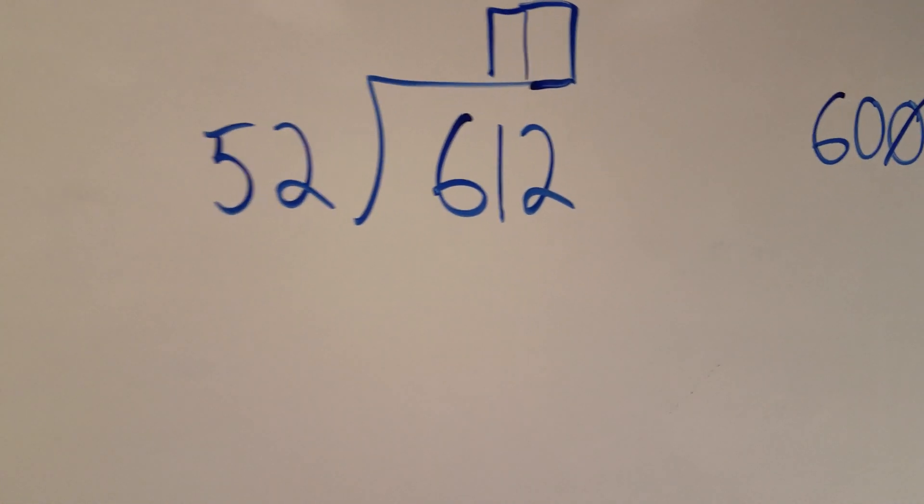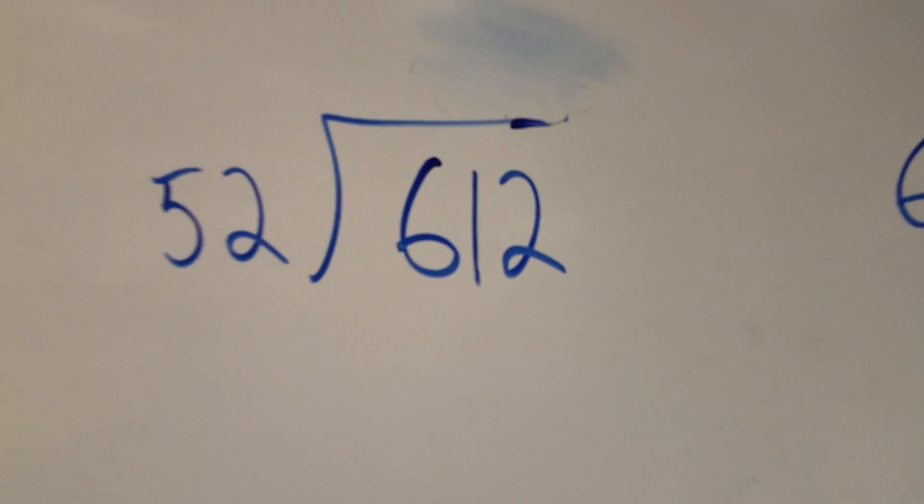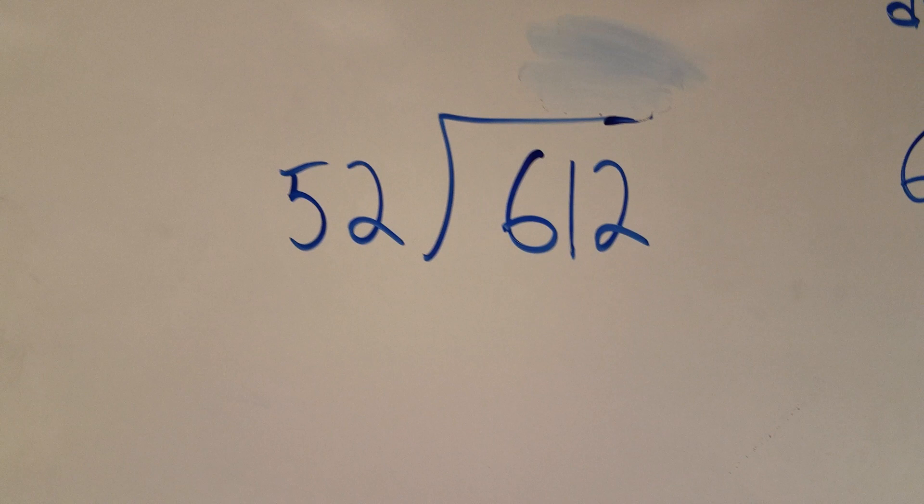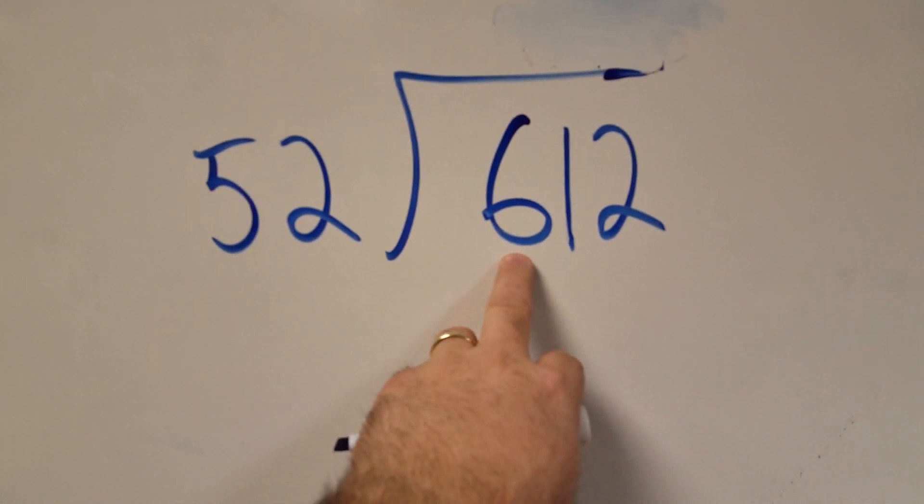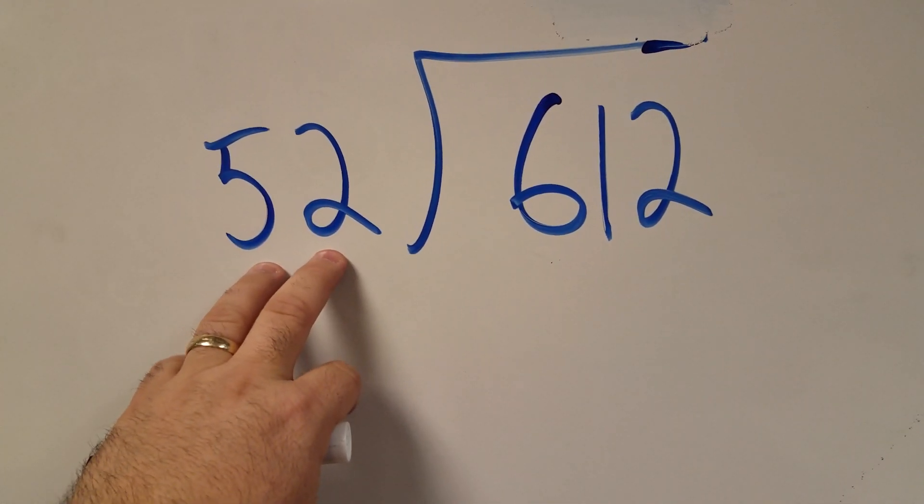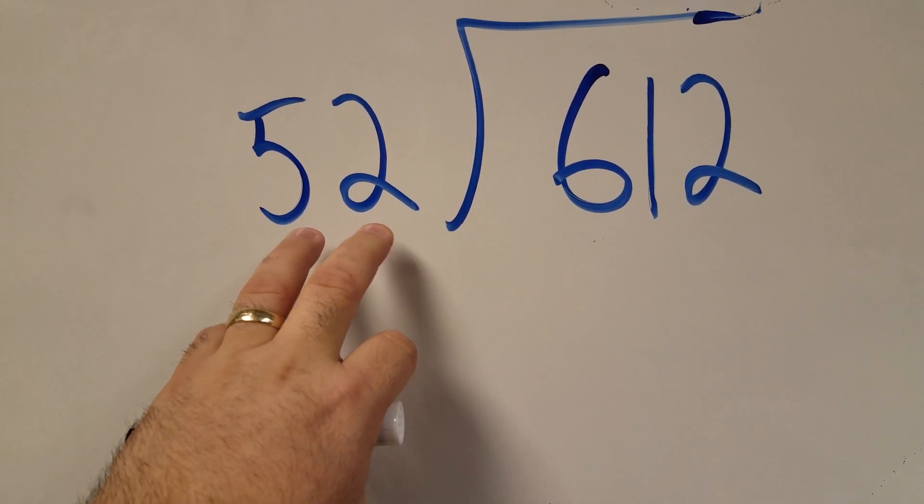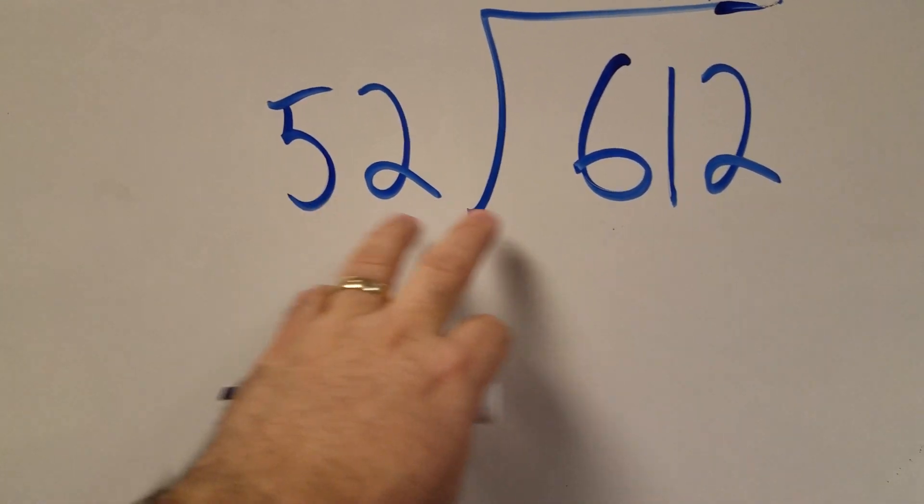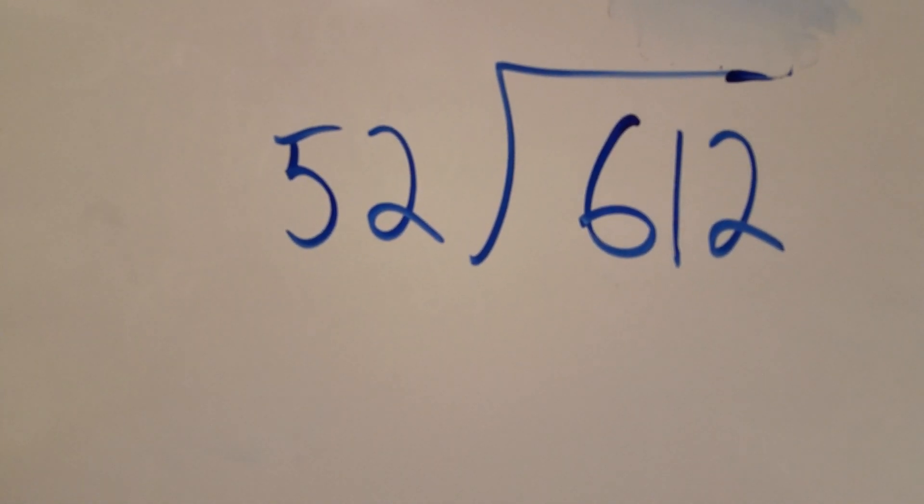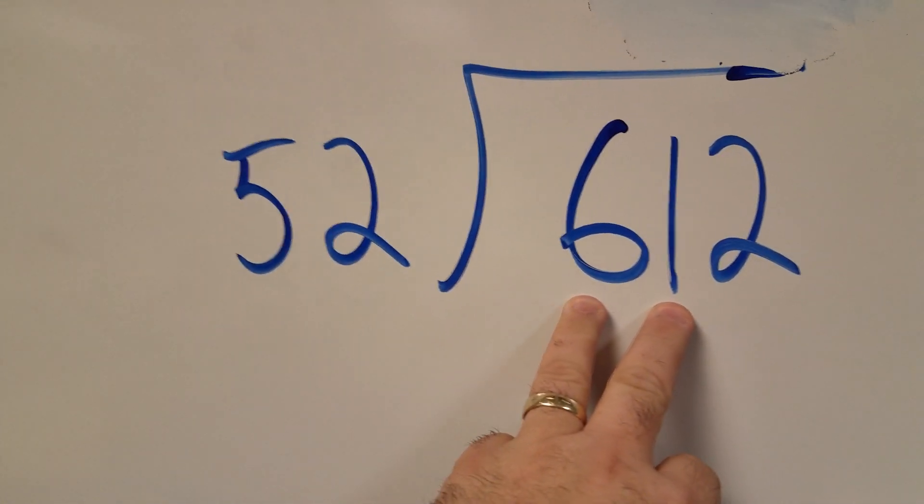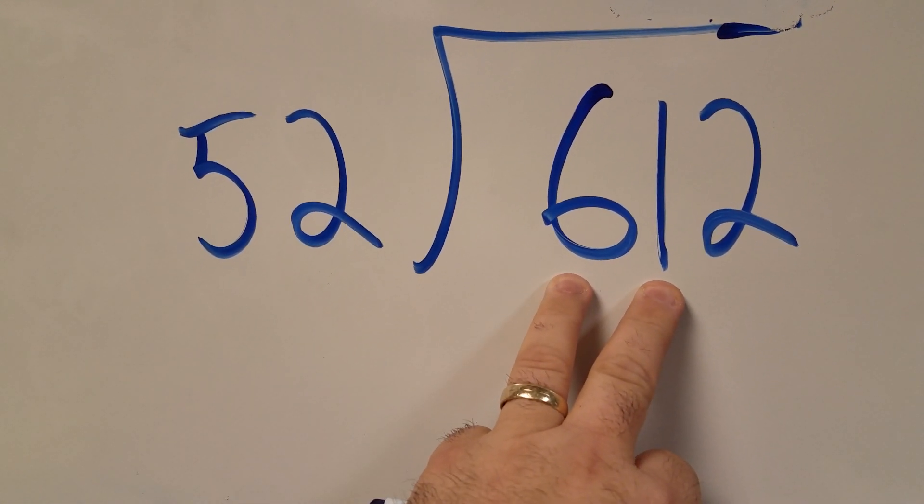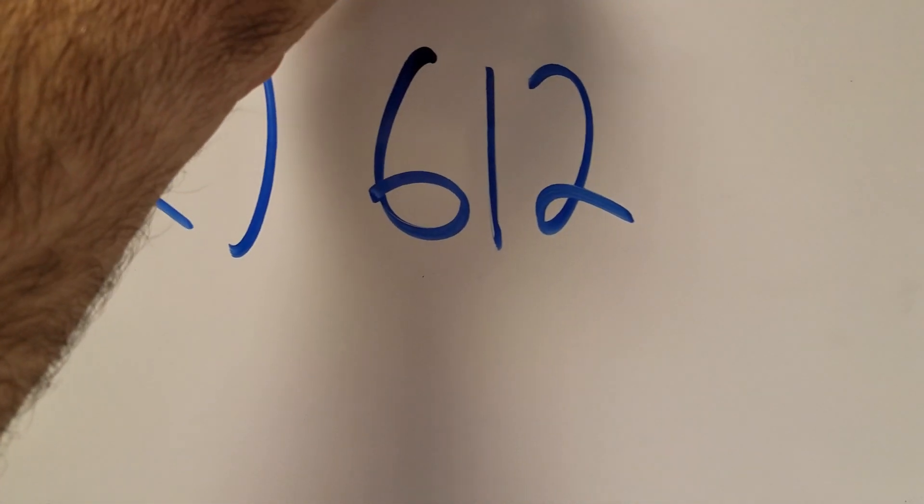I'm going to do this using the standard algorithm. First thing I look at is: can 6 be divided by 52? Or as I tell the kids, can a size 52 shoe go into a size 6? We know that's impossible. So I got to look at the second digit. Can 61 be divided by 52? Yes it can.